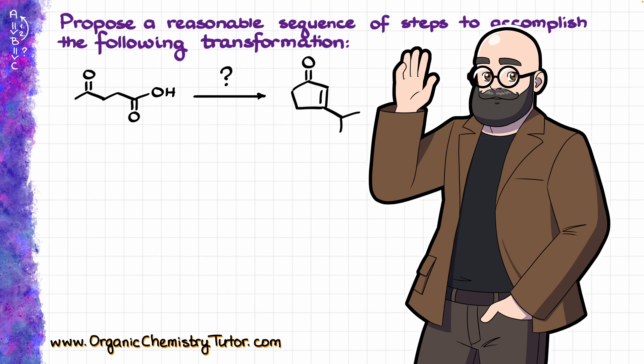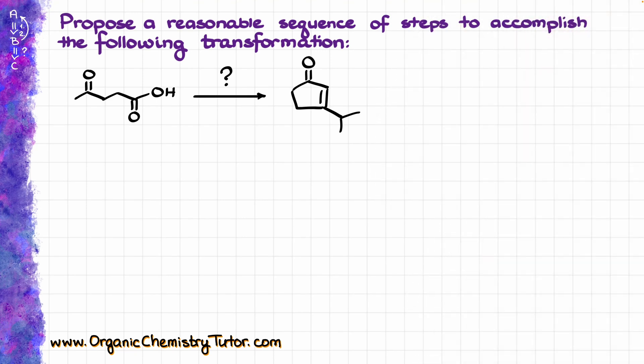Hey everyone, Victor here. In this video I want to talk about this fun looking synthesis where we are starting with the 4-oxopentanoic acid and we are going to make the cyclic enone as our final product.